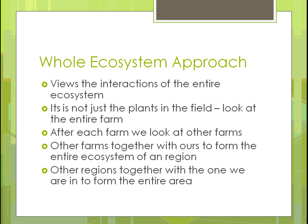Once we start getting neighboring farms to work right and have a natural ecosystem, we have to form an ecosystem of a region — a state, a portion of a state, or a specific area like a valley between two mountain ranges. And then once we get that to coalesce together, we need to scale up to an entire area — the entire state, the entire western part of the United States, the entire United States. That type of thing.